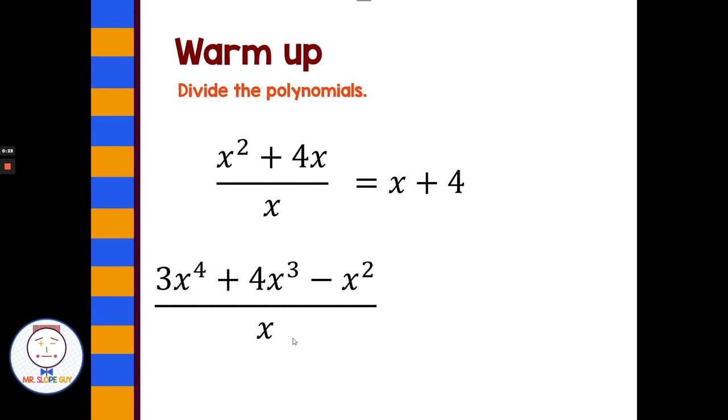On the second one, x divides evenly into 3x to the fourth, into 4x to the third, and into negative x squared, giving us 3x to the third plus 4x squared minus x.